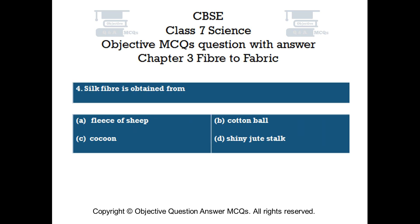Question number 4. Silk fiber is obtained from: Option A Fleece of sheep, Option B Cotton ball, Option C Cocoon, Option D Shiny Jute Stalk.